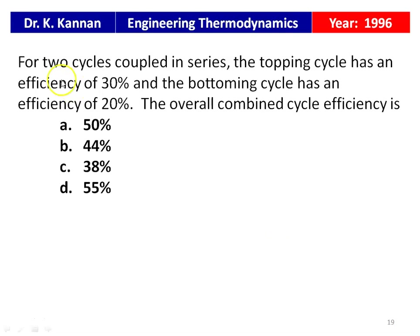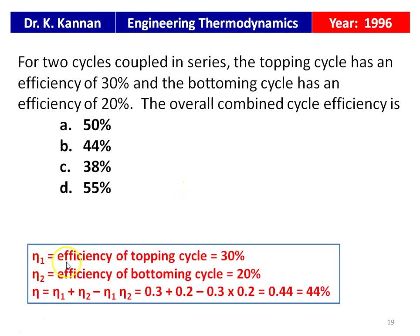Also from the 1996 question paper: for two cycles coupled in series, the topping cycle has efficiency of 30% and the bottom cycle has efficiency of 20%. The overall combined cycle efficiency: η = η1 + η2 − η1×η2 = 0.3 + 0.2 − (0.3 × 0.2) = 0.5 − 0.06 = 0.44 = 44%. The answer is 44%.